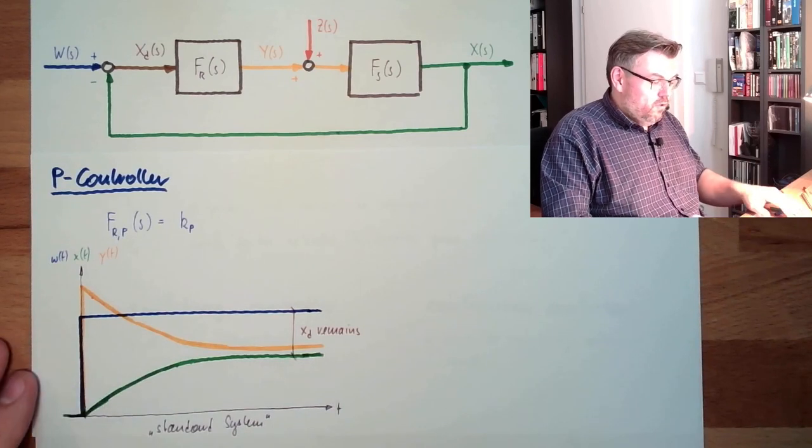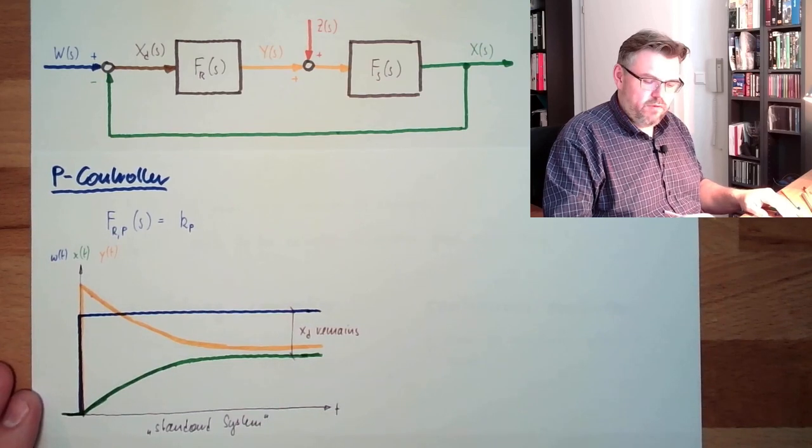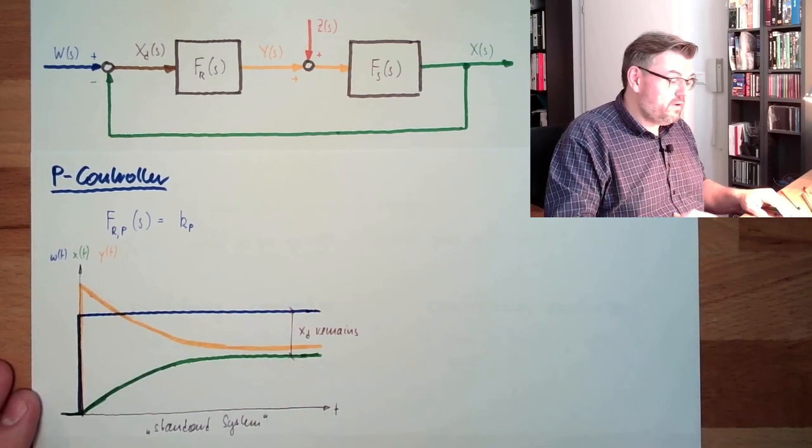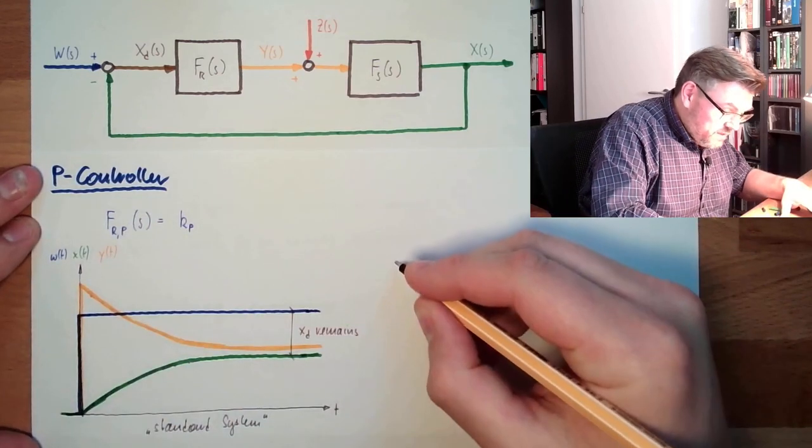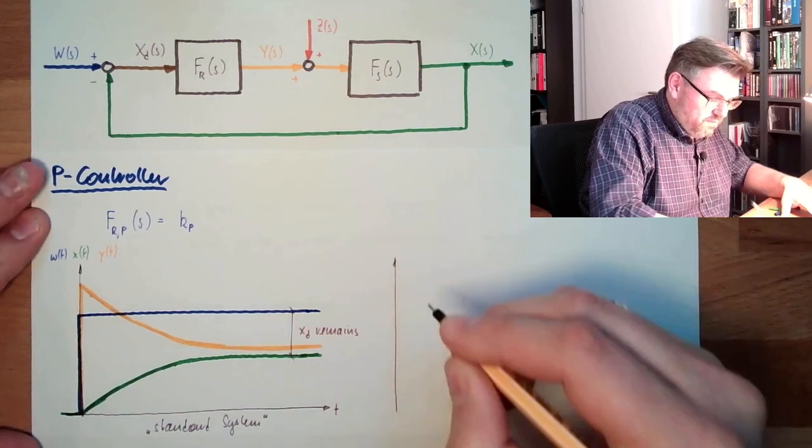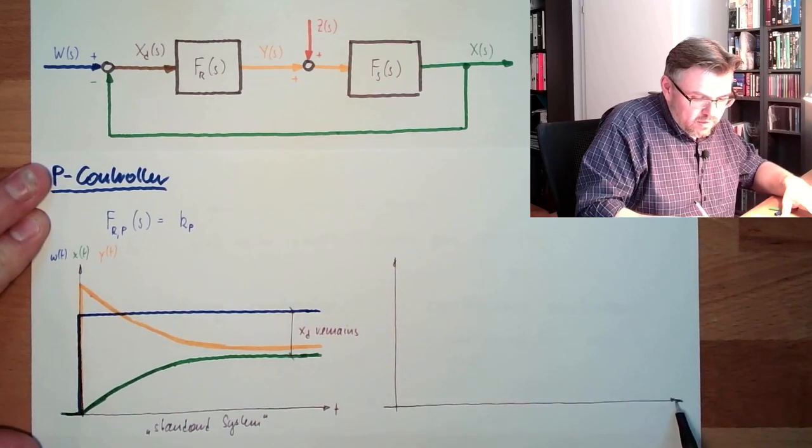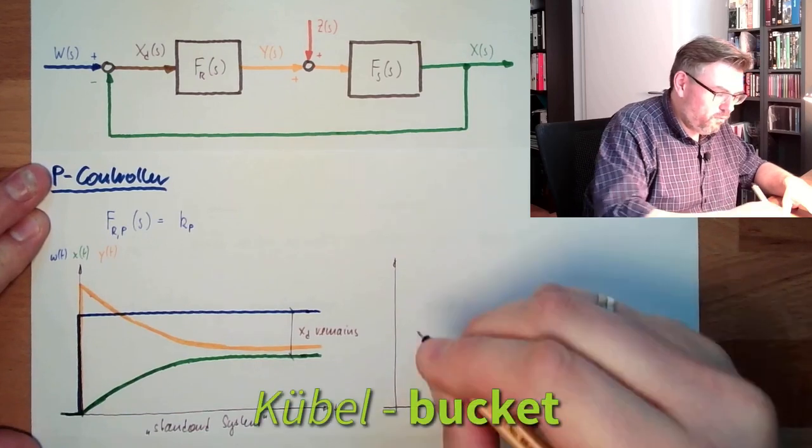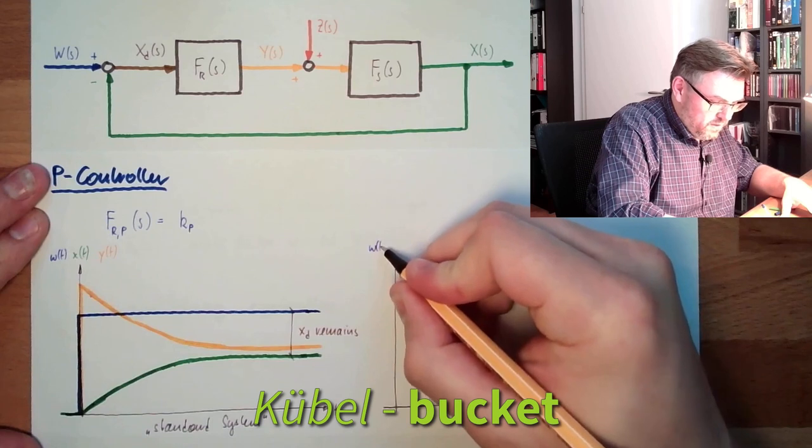This is a P-controller, it sounds really crappy, but however there are systems out there where a P-controller is perfect. Let's imagine we do not want to heat our house. Let's imagine we want to fill a bucket or something like this, we want to fill it with water.